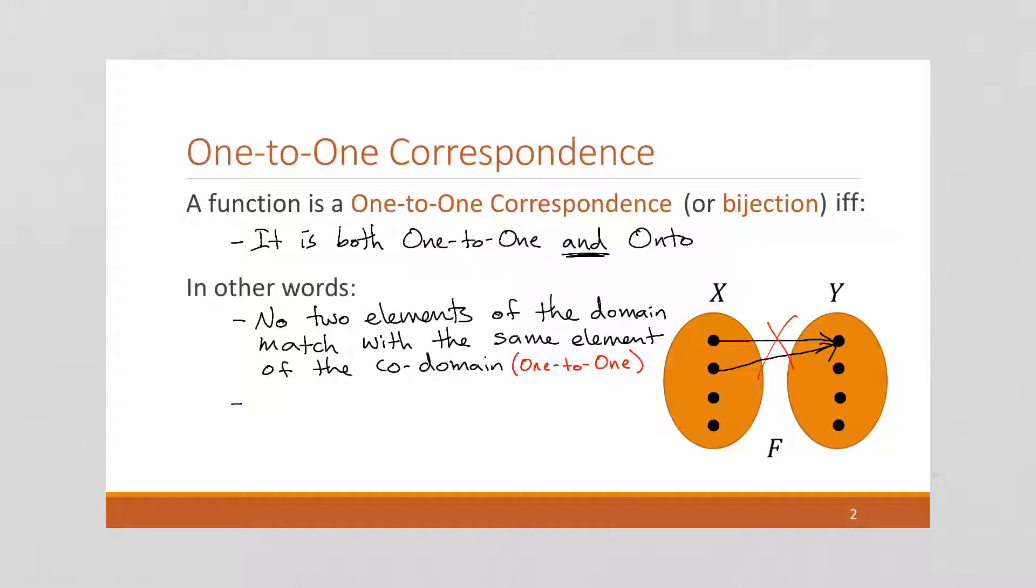And secondly, that there is no element of the codomain that is not matched to an element of the domain. Right? And this is the onto property.